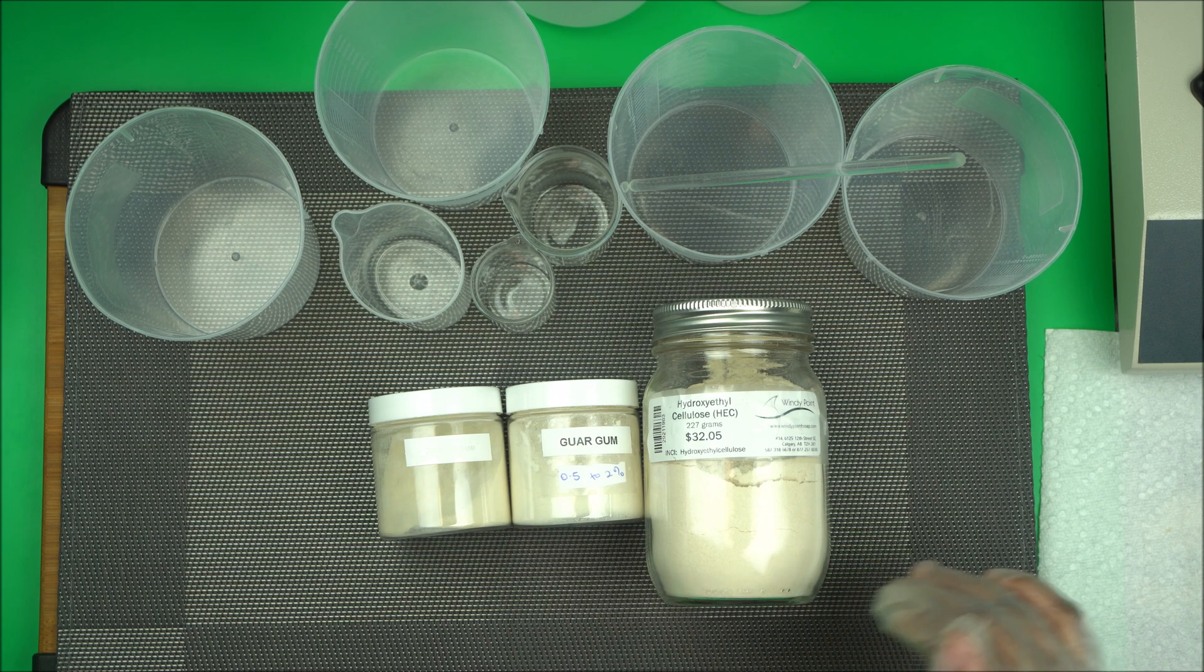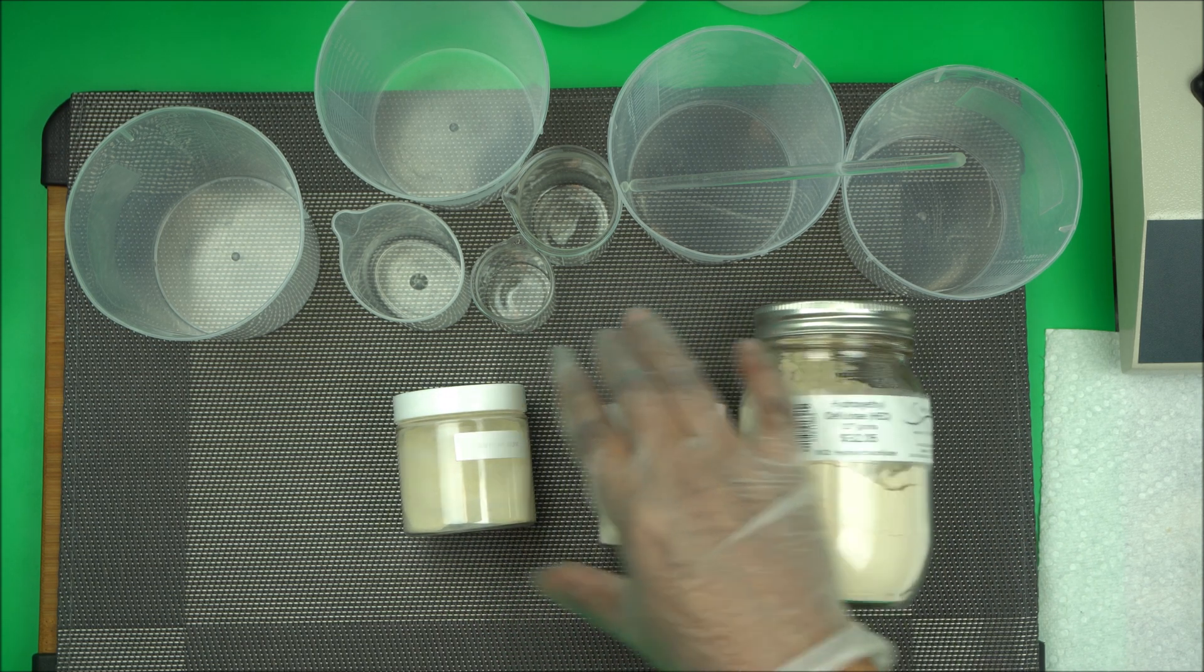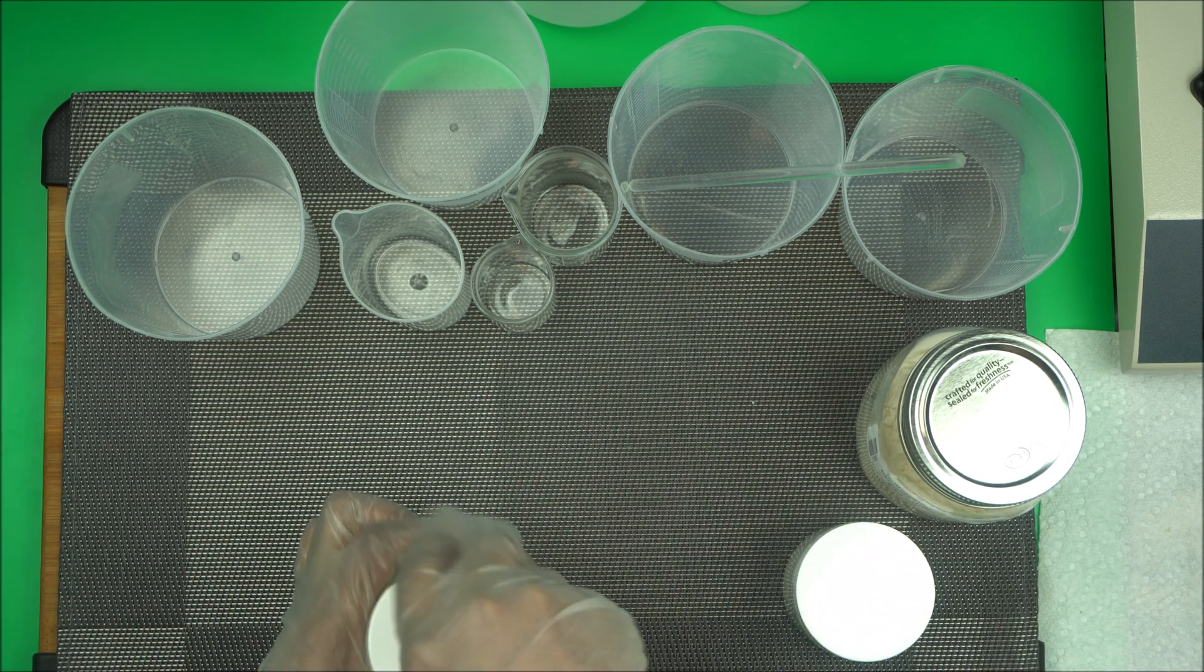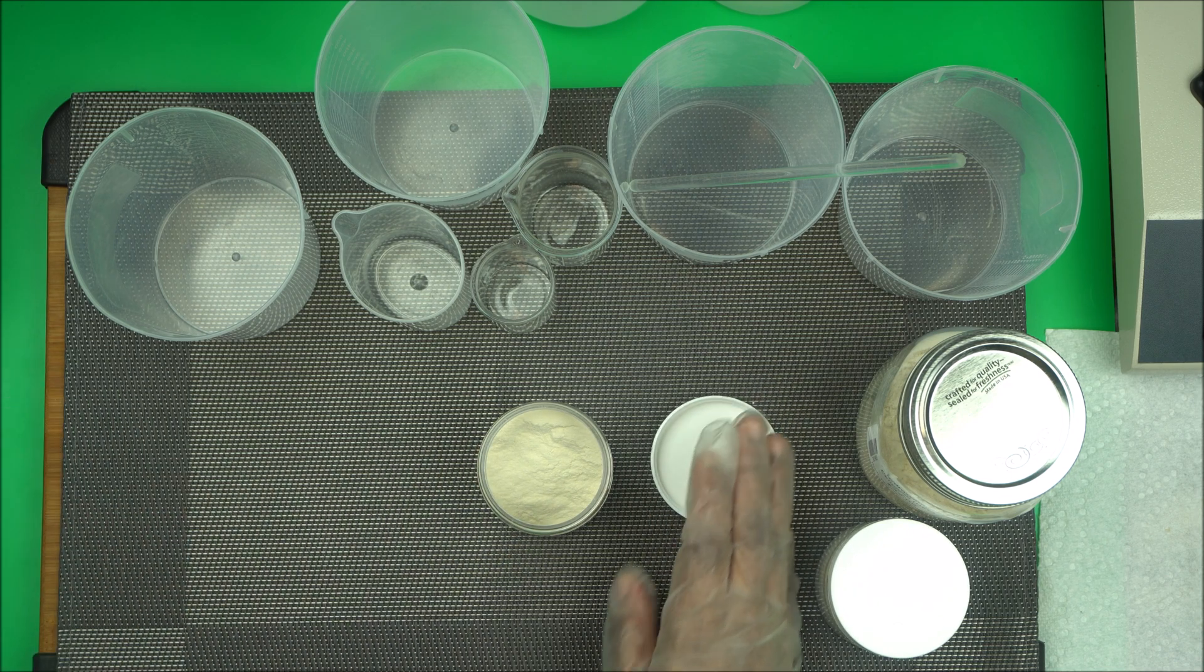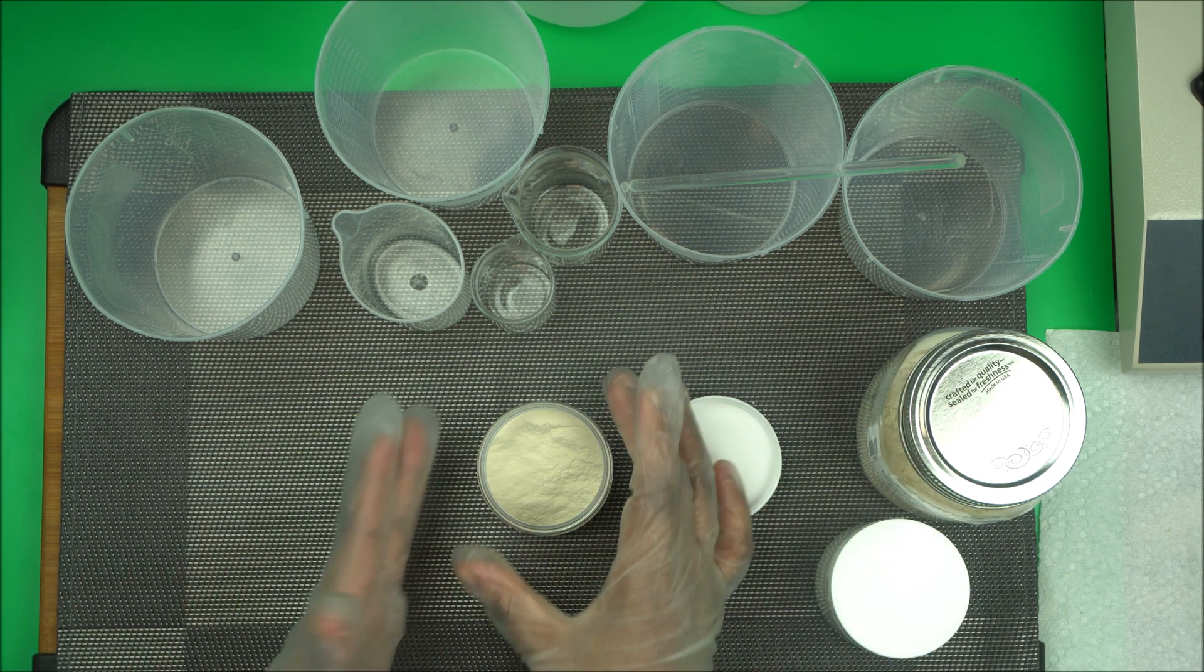Three of them have their major function. Let me talk about xanthan gum first. Xanthan gum is a natural emulsifier. This is how it looks. It's a natural emulsifier and stabilizer. It's derived from corn sugar.